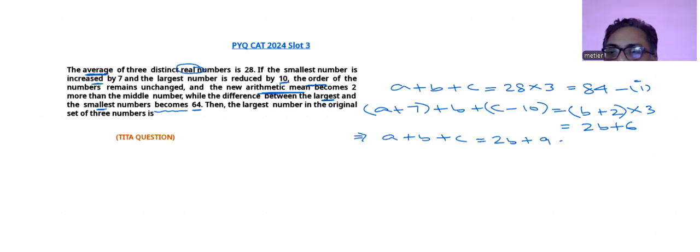So you will be getting after simplification 84. I think I have done a simple mistake here. It will be 3b plus 9.